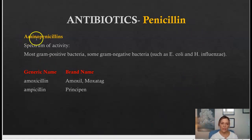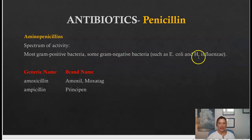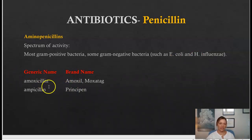The amino penicillins are used mostly for gram-positive bacteria and some gram-negative bacteria such as E. coli. Common generic names you've probably heard of are amoxicillin and ampicillin.